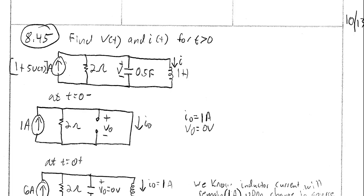In this video we will talk about how to solve problem 8.45. In this problem we are asked to find the voltage with respect to time and the current with respect to time for any time t greater than zero. Here is our circuit.